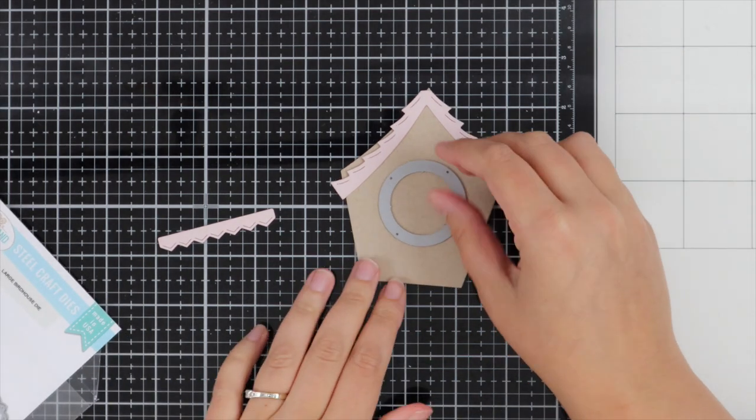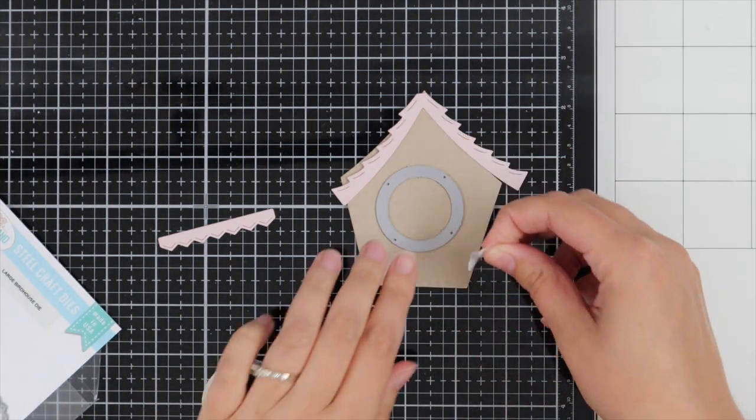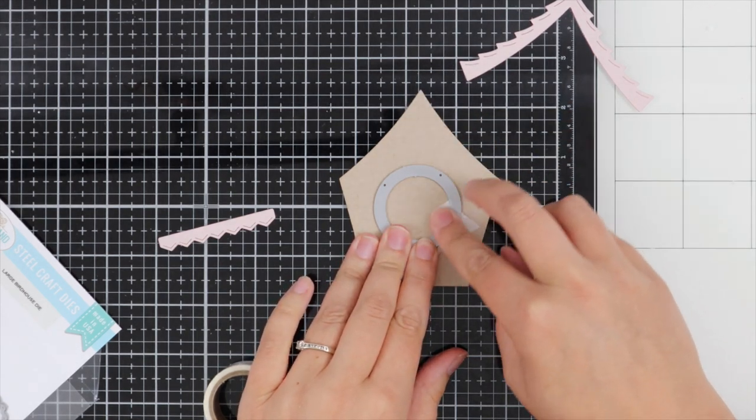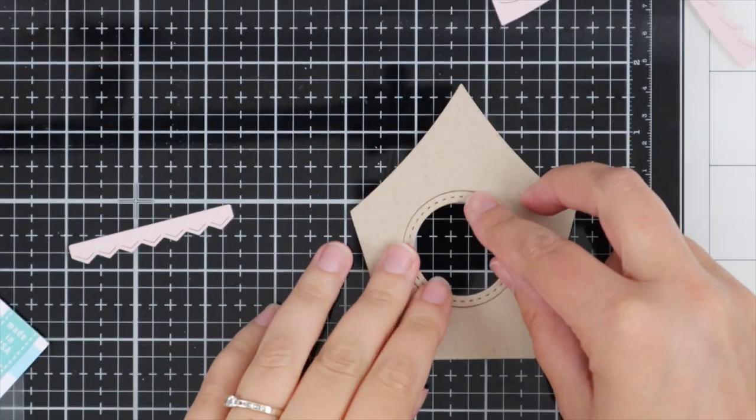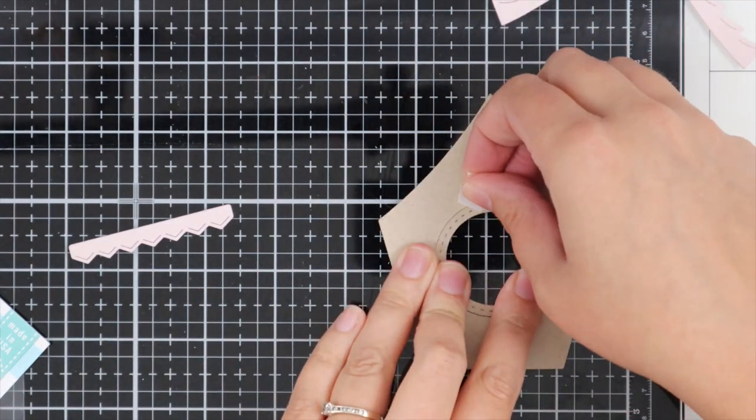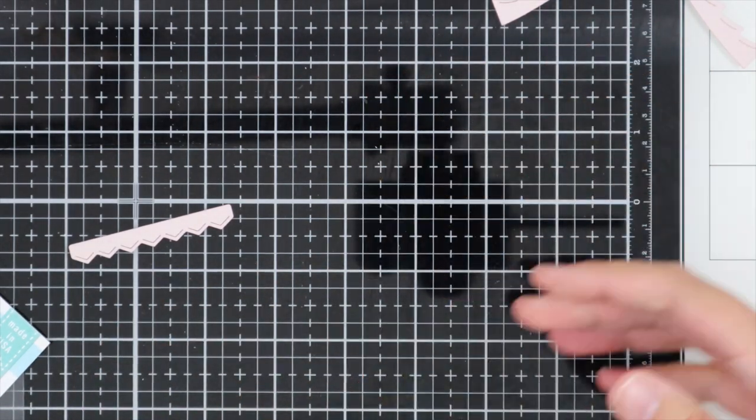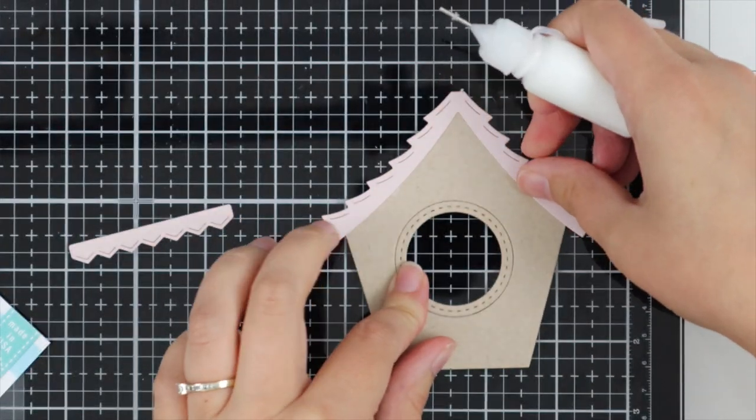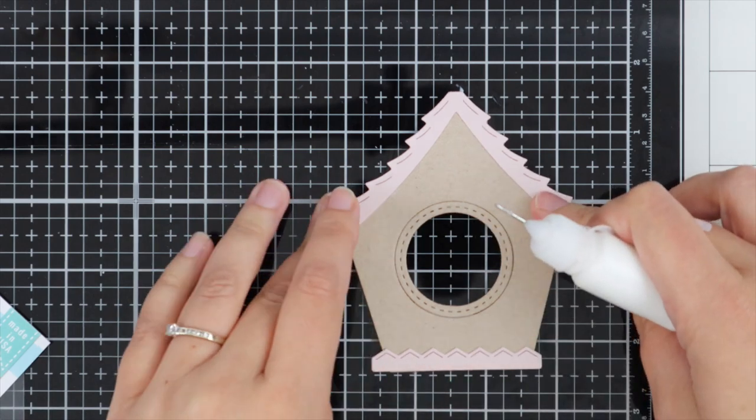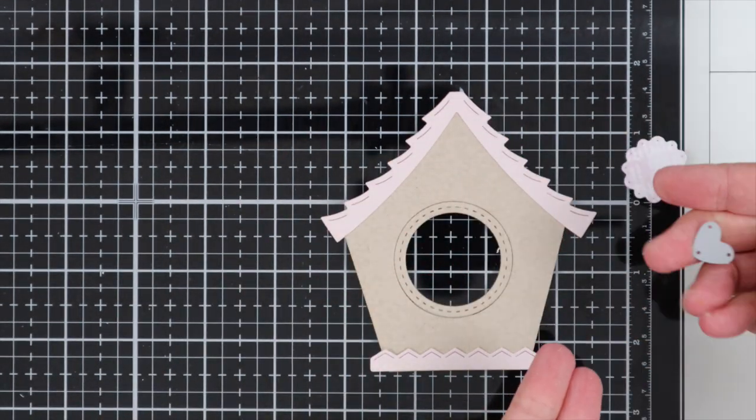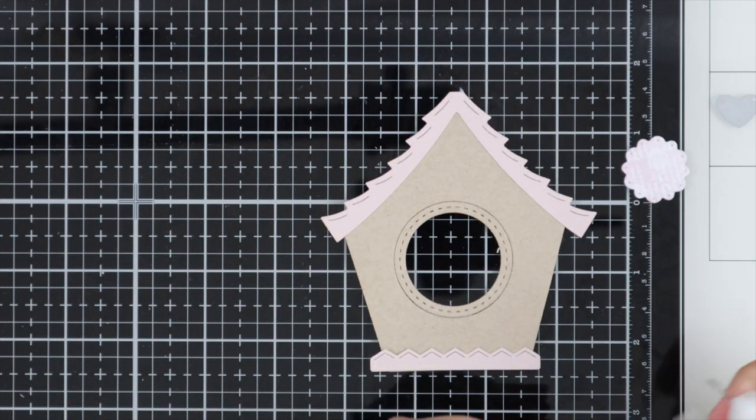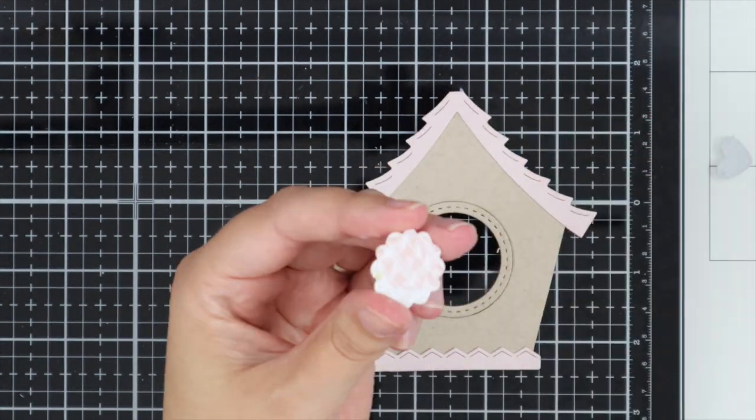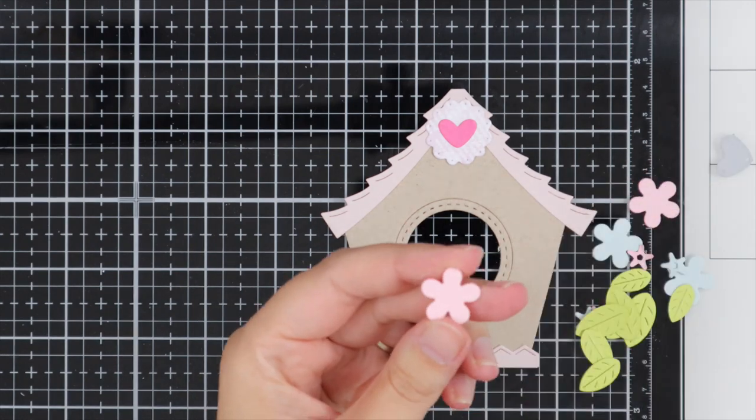I've die cut the house, the little roof, and the bottom part. I'm showing you how I add my windows with washi tape to secure it down, then run it through my die cutting machine. I flip it over and secure washi tape at the back. I'm doing this because I'm adding 3D foam pads.